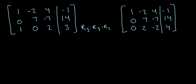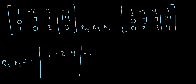For reduced row echelon form, all pivot entries must be 1. The first pivot is already 1, but the next pivot — the first non-zero value in row 2 — is currently 7. So we divide every value in row 2 by 7. Row 2 becomes: 0, 1, negative 1, 2. Rows 1 and 3 remain unchanged.